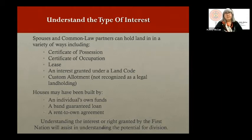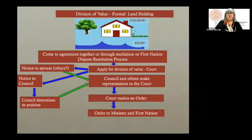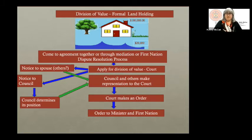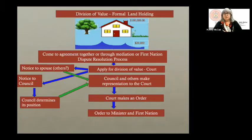To understand division, you need to consider the types of interests that exist in your community. Spouses and common law partners could hold land as certificates of possession, certificates of occupation, lease agreements, interests granted under a First Nation land code, or custom allotments — though custom allotments aren't recognized as legal land holdings under the Indian Act. Family homes may have been built using individual funds, a band-guaranteed loan, or a rent-to-own agreement. Understanding the type of interest granted by the First Nation will assist individuals in understanding the potential for division.